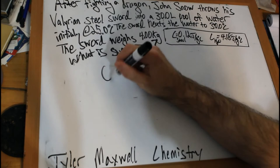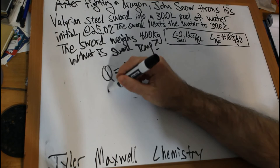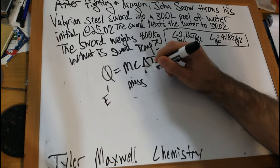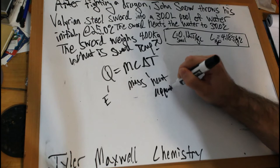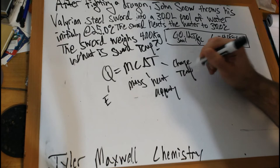So first off, how much energy was transferred to the pool of water? We want to use our Q equals mc delta t equation, where Q is energy, m is mass, c is heat capacity, and delta t is change in temperature.